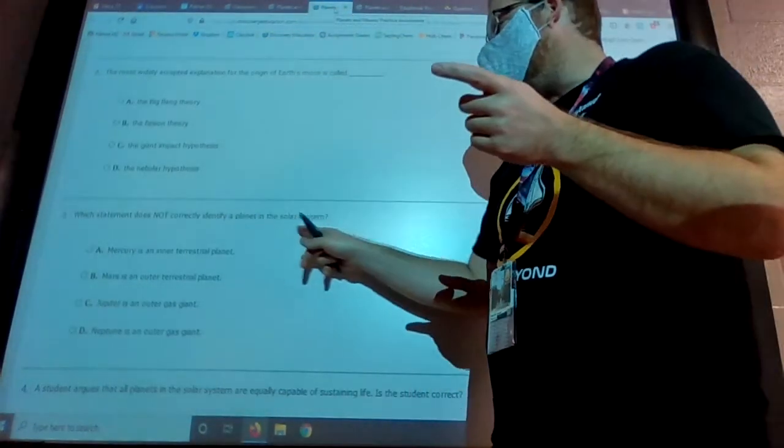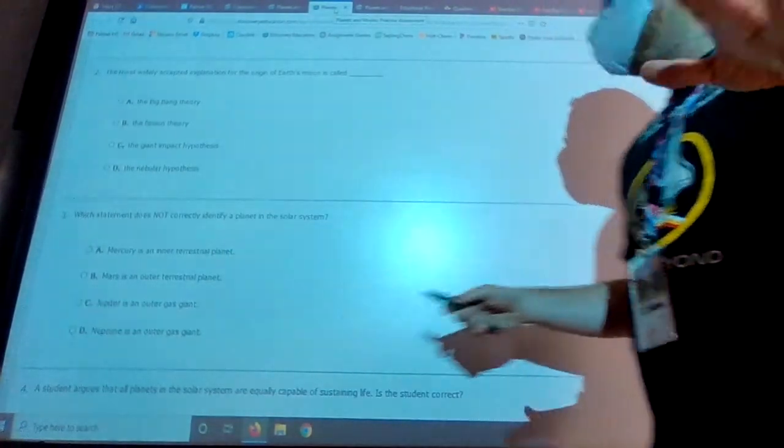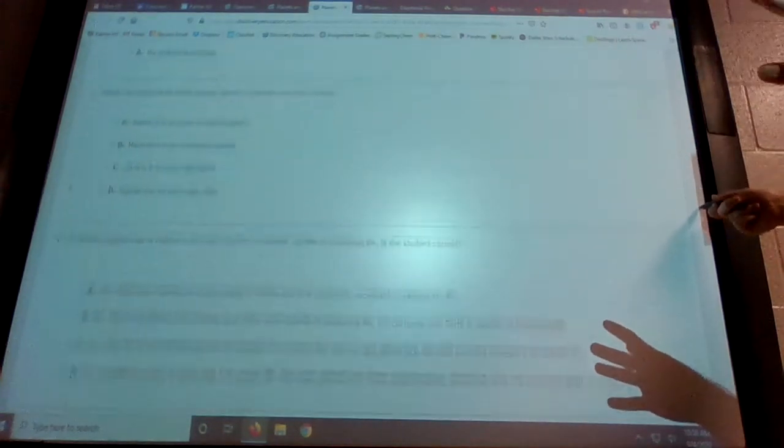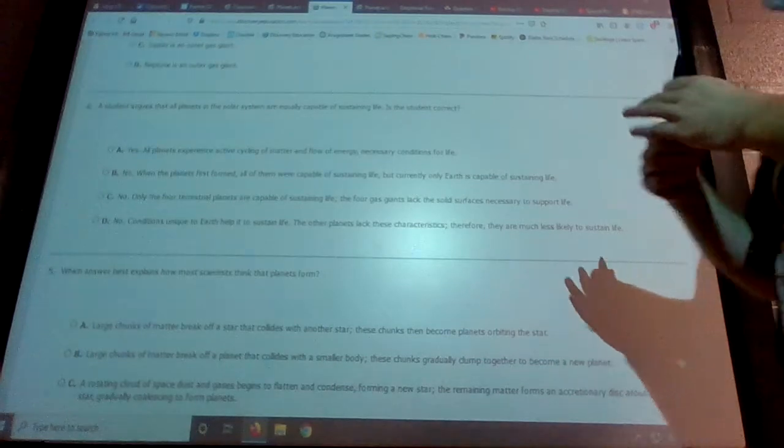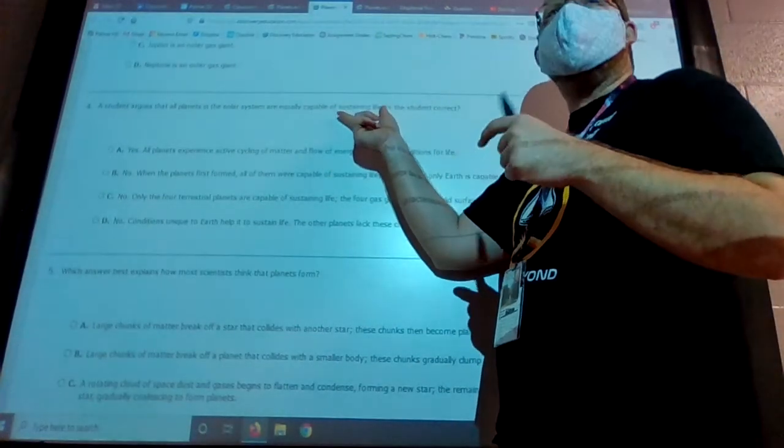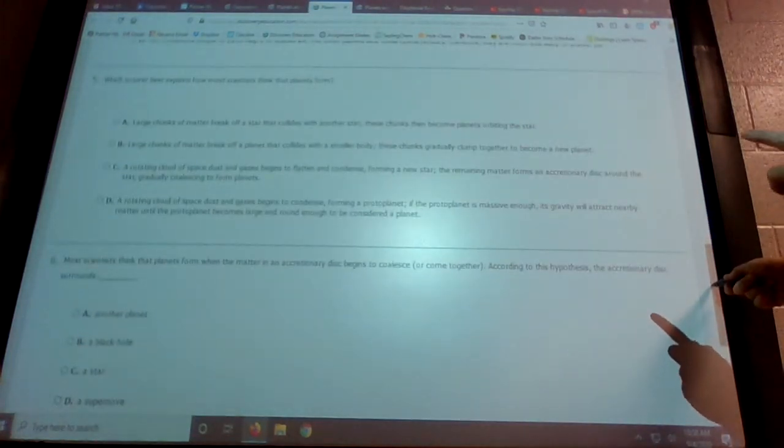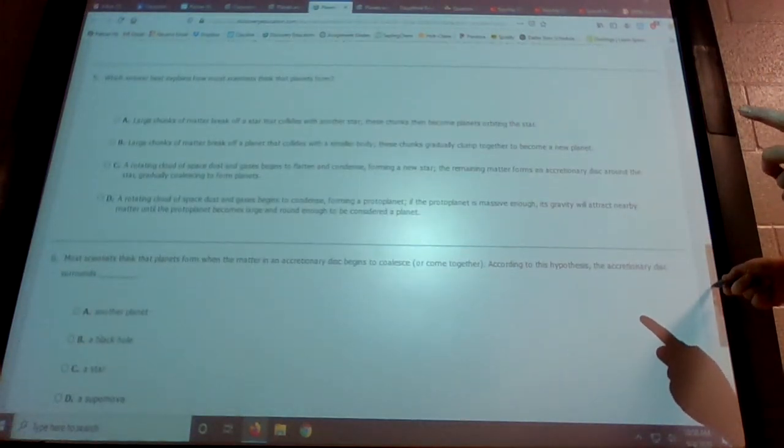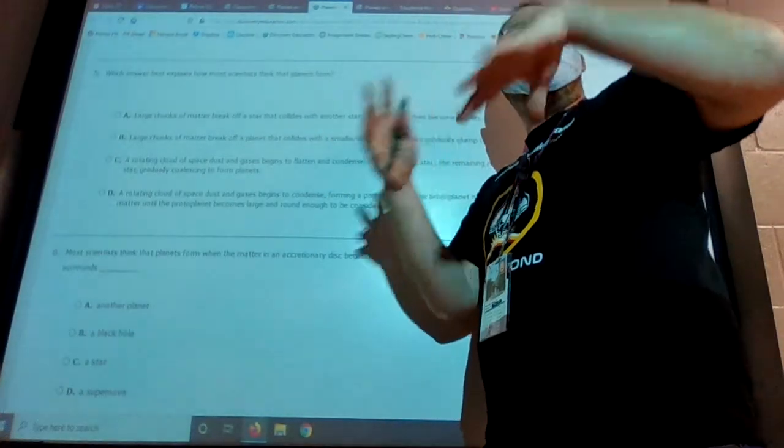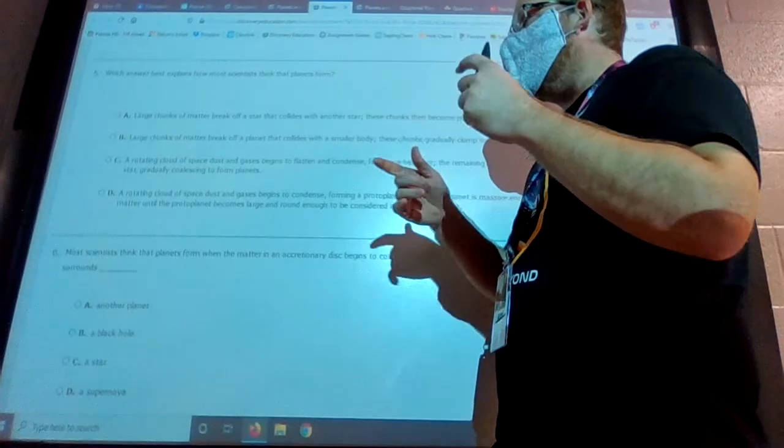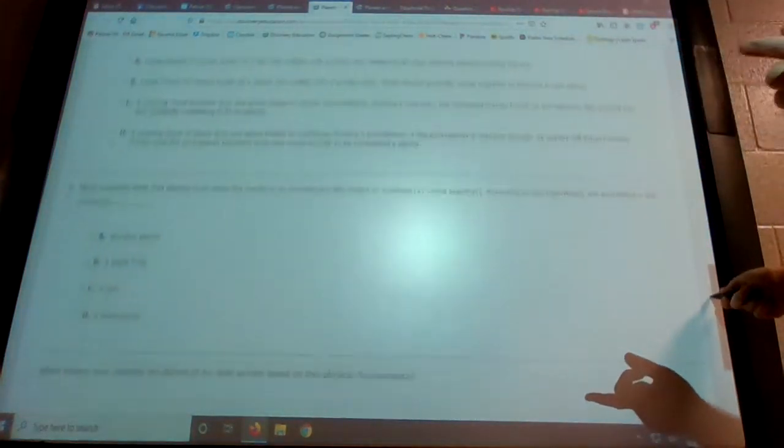Which statement does not correctly identify a planet in the solar system? This is just kind of talking about the inner planets versus the outer planets, which should be fairly easy. A student argues that all planets in the solar system are equally capable of sustaining life. Is that true? No. There's really only one. Which answers best explain how most scientists think that planets form? We talked about that. That's that nebular hypothesis theory. And so two of these are going to talk about your rotating cloud, but you're looking for the one that has the star in the middle.